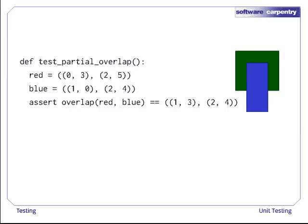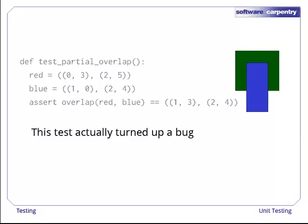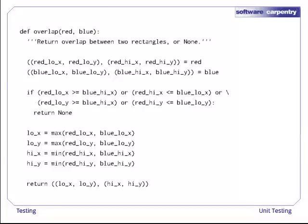And here's a third test, where one rectangle is skinnier than another. This test case actually turned up a bug in the first version of the overlap function that we wrote. Here's the function. It takes the coordinates of each rectangle as input, unpacks them to get the high and low x and y coordinates of each rectangle, checks to make sure that the rectangles actually overlap, then calculates the coordinates of the overlap and returns the result as a new rectangle. Take a few moments and see if you can spot the bug.